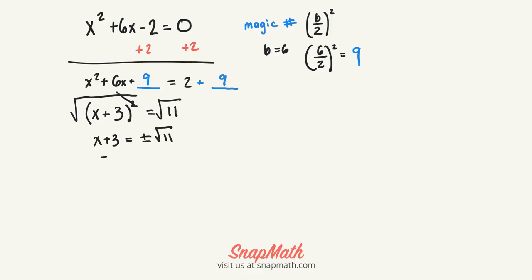And then we subtract 3 on each side. x equals negative 3 plus or minus radical 11.